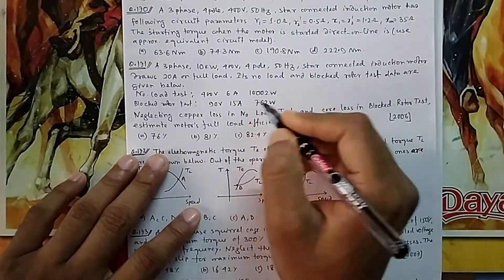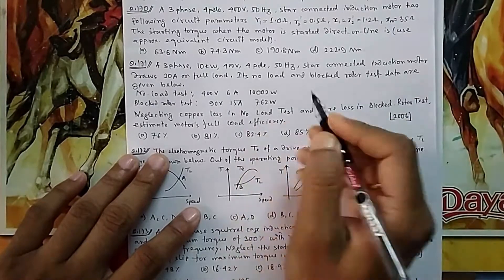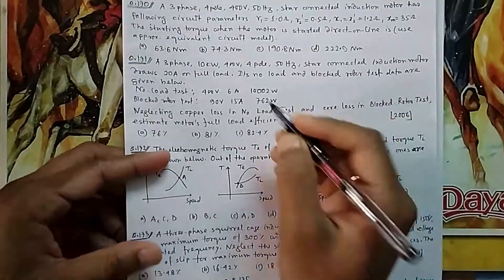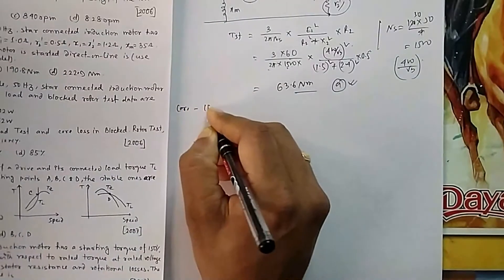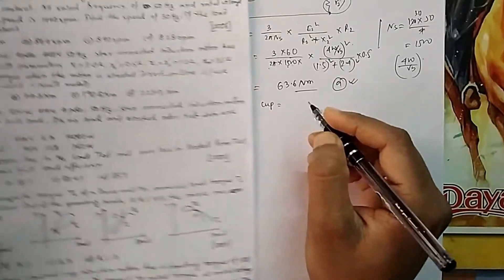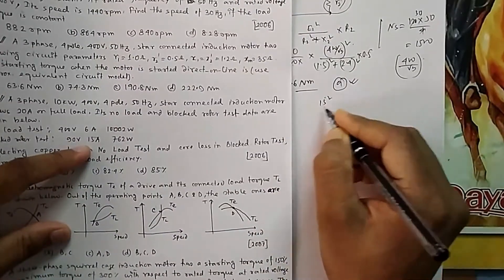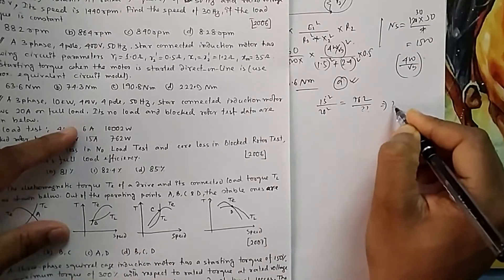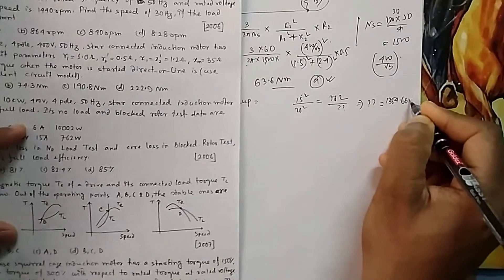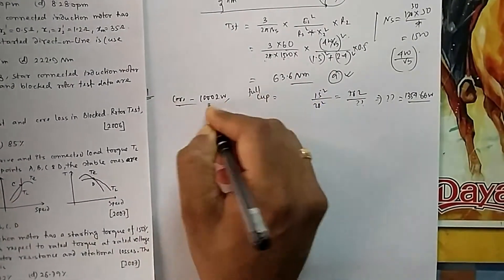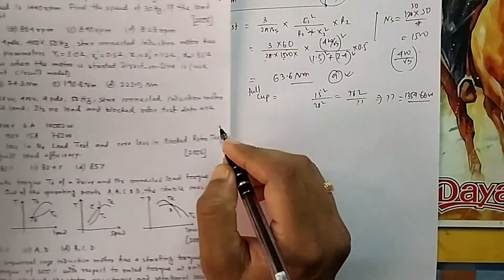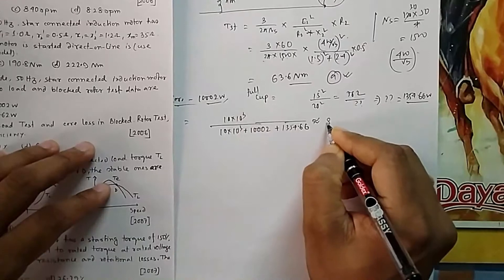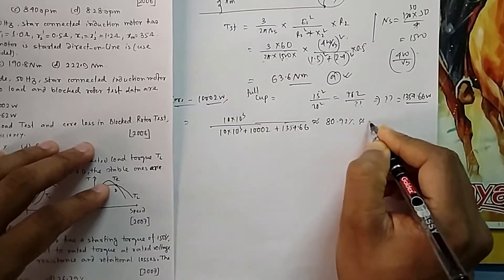Neglecting copper loss in the no-load test: in the no-load test we neglect copper loss, and in the blocked rotor test we neglect core loss. Estimate the motor full load efficiency. Core loss is fixed at 1002 watt. Copper loss at 15 ampere is 762 watt. Since copper loss is proportional to I², full load copper loss at 20 ampere = (20²/15²) × 762 = 1354.66 watt. Efficiency = 10,000 / (10,000 + 1354.66 + 1002) ≈ 80.92%, approximately 81% — that is option B.